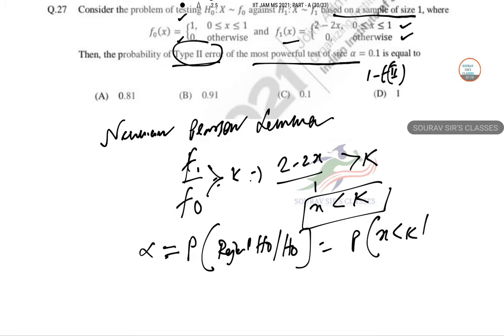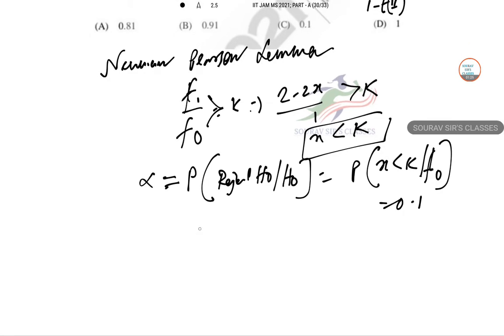This is 0.1, so integration 0 to K of 1, this is 0.1. So K equals 0.1.